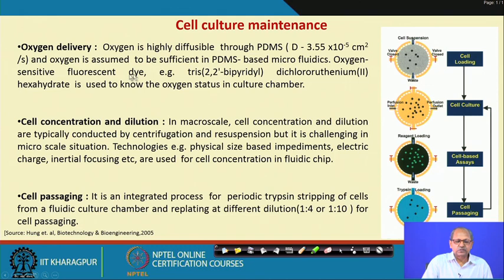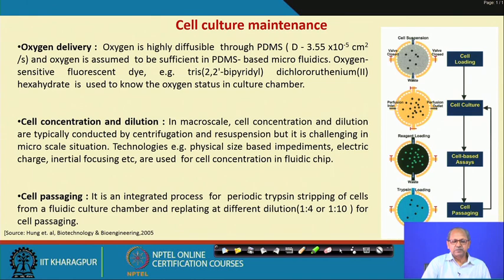Cell concentration and dilution in macro-scale systems is done by centrifugation with different dilutions using centrifuge and tubes. In micro-scale systems, technologies using physical size-based impediments, electric charge, and inertial focusing have been developed for cell concentration directly on a fluidic chip, though these are not commonly used unless full automation is desired.